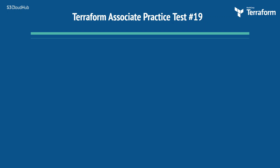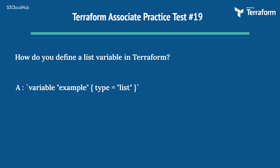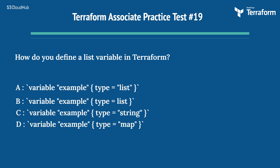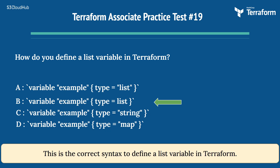The nineteenth question is: how do you define a list variable in Terraform? Option A: variable example { type = list }. Option B: variable example { type = list }. Option C: variable example { type = string }. Option D: variable example { type = map }. The right answer is Option B: variable example { type = list }. This is the correct syntax to define a list variable in Terraform.